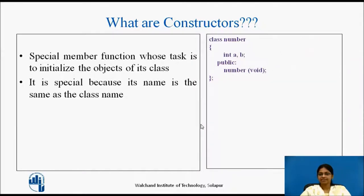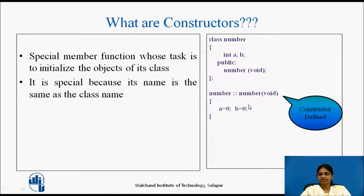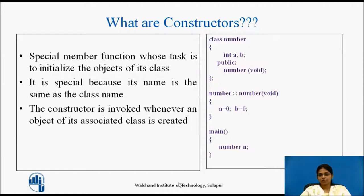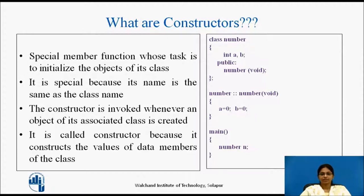The constructor is declared and defined here. Its role is to initialize the data members A and B to 0. In the main function, we declare object N. The constructor is invoked automatically whenever an object of its associated class is created, so when object N is created, the constructor gets invoked and A and B are initialized to 0. It is called a constructor because it constructs the values of the data members of the class.